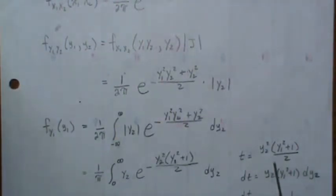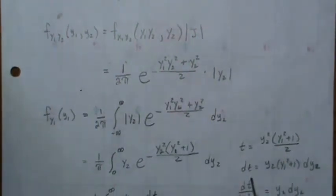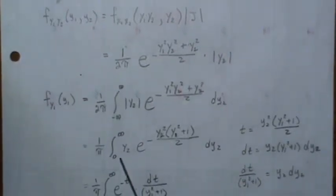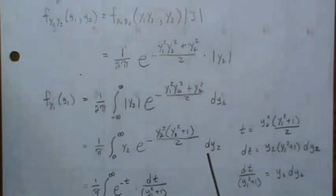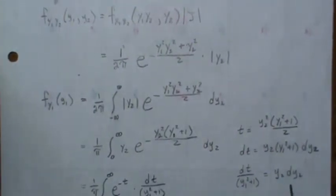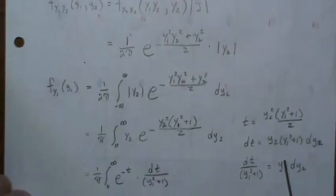Now if we make a change of variable technique, let t equal this quantity here. Then the derivatives become this, and since there's a y2 and dy2 here, we divide that to the other side and we're left with this.